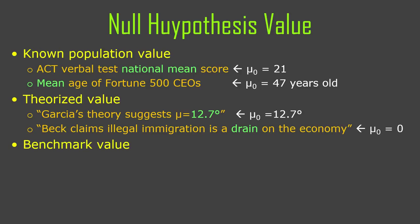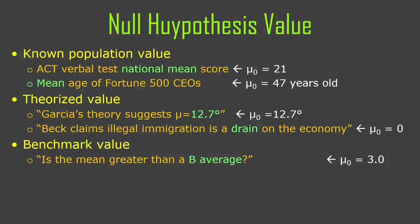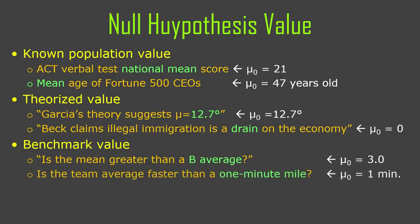In theory, we should be able to do a range of values, but we never do. Or it can just be a benchmark: is the mean GPA for psych majors greater than a B average? In which case, mu zero is GPA of 3. Or is the team average faster than a one-minute mile? The null hypothesis mean would be one minute.